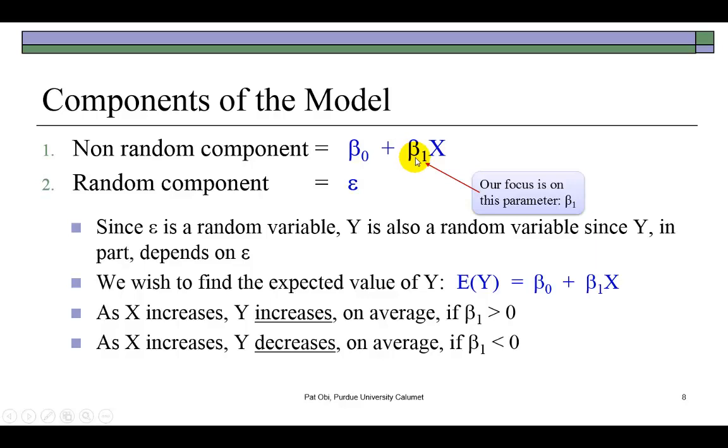This parameter β₁ is the key ingredient, the key outcome we seek to identify. As the independent variable X increases, Y will increase if, on average, β₁ is positive. So if this guy here is positive, it tells us that if X goes up, Y would go up. If, on the other hand, it's negative, then it's telling us as X increases, Y would decrease on average, or if X decreases, then Y would increase. So they're moving in contrary directions.